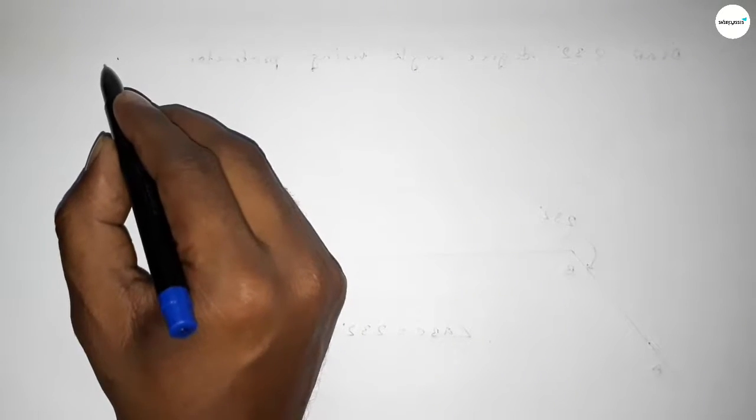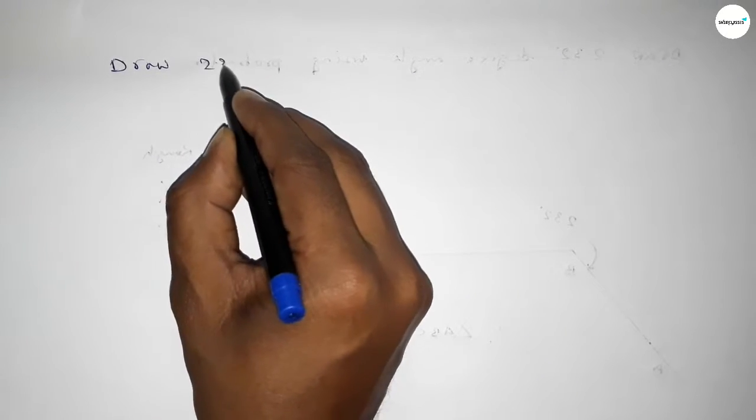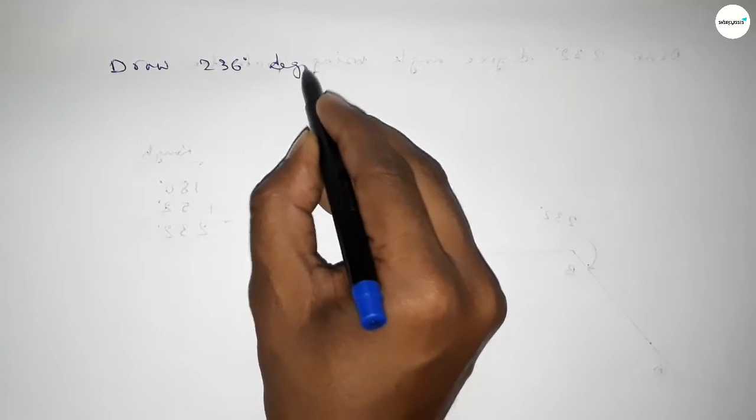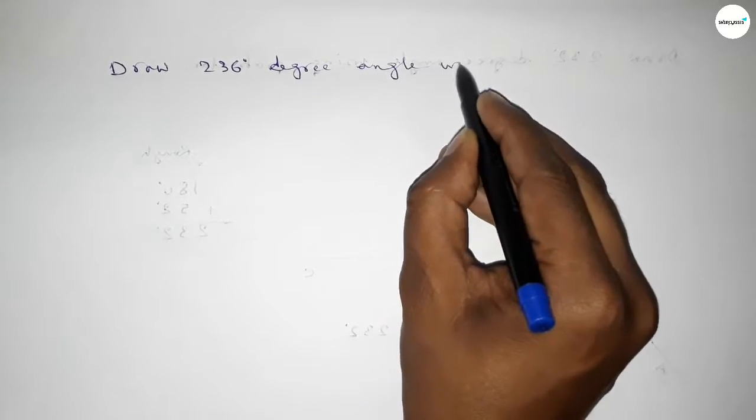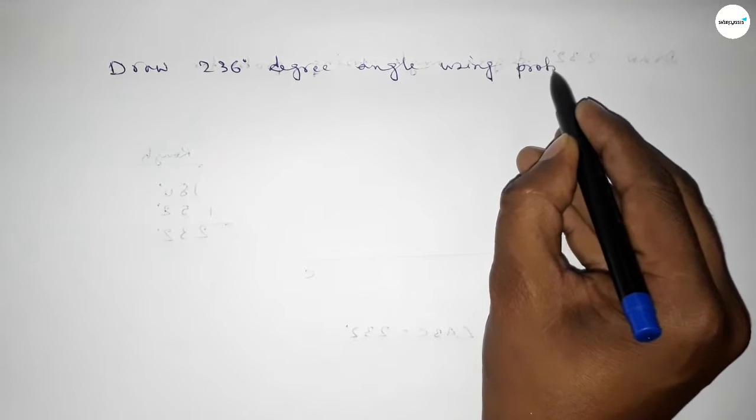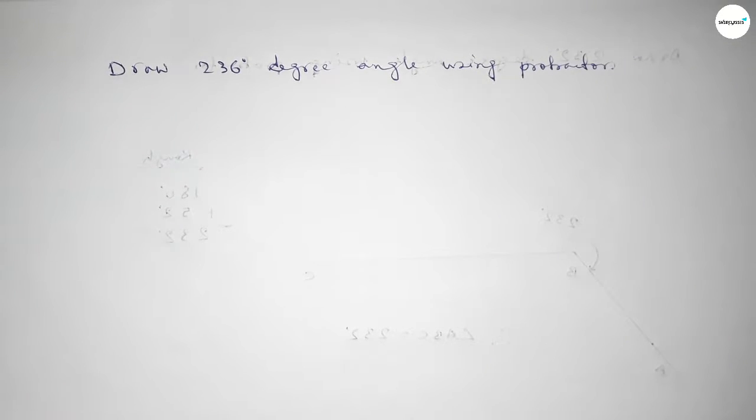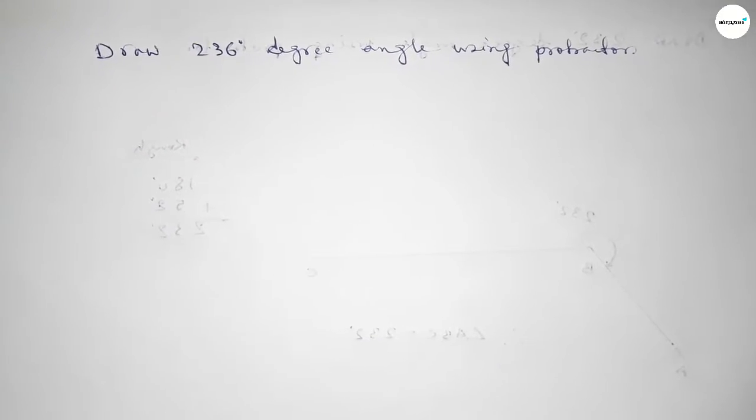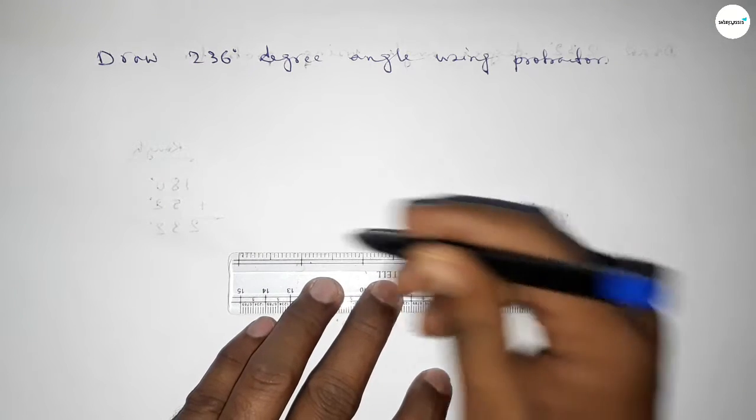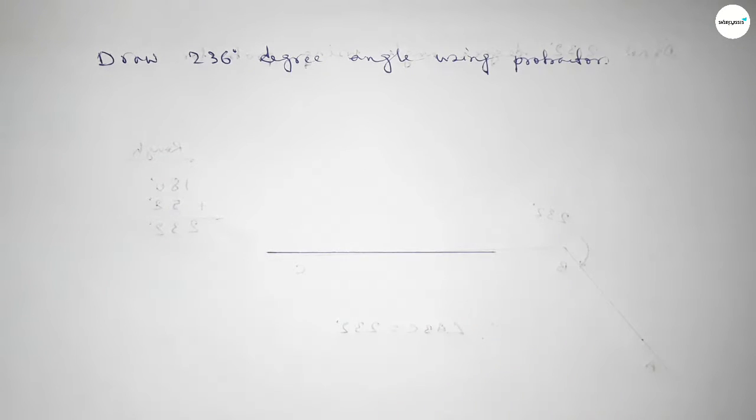Hi everyone, welcome to SI chair classes. Today in this video we have to draw a 236 degree angle using a protractor. So let's start the video. First of all, we have to draw here a straight line of any length.